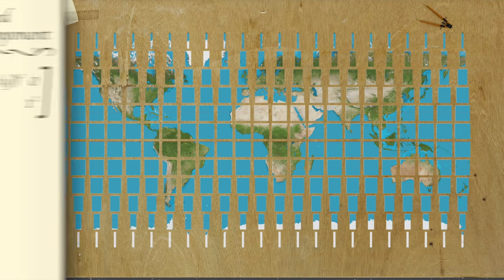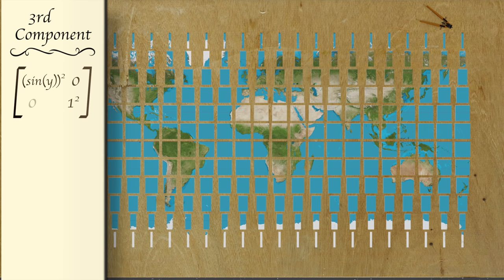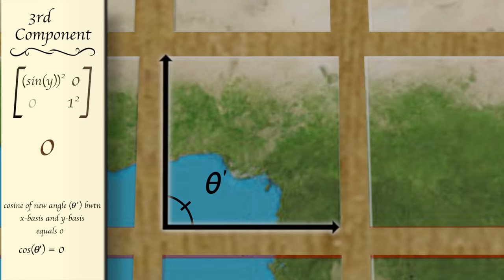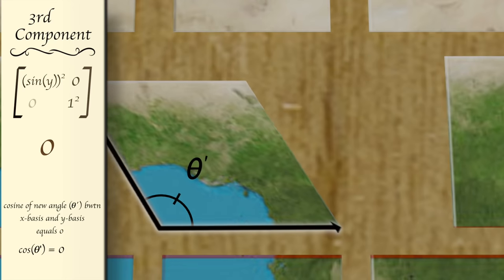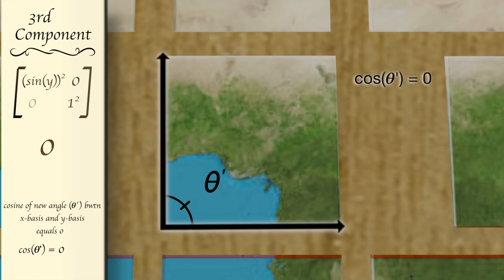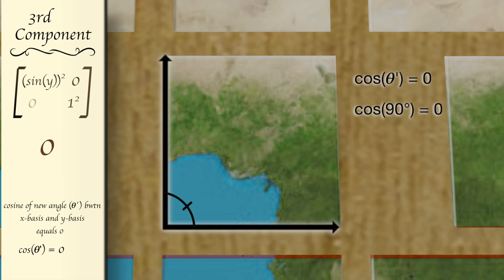Finally, our third number, or component, is 0. This tells us that the cosine of the new angle between our transformed axes should be 0. The cosine of 90 degrees is 0. And since the old angle between the axes of our pieces was already 90 degrees, this means there will be no skewing of any of our pieces across the map.